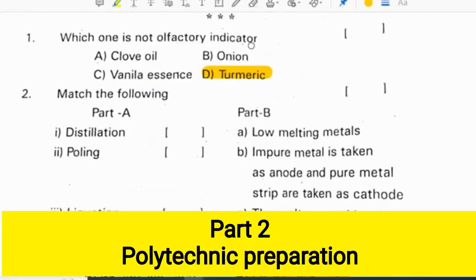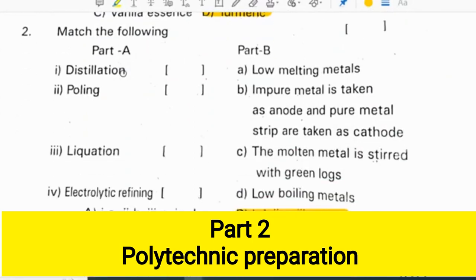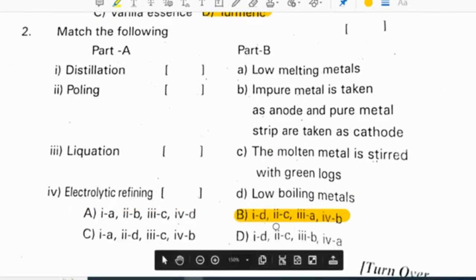Which one is not an olfactory indicator? Turmeric. Match the following: distillation, poling, liquation, electrolytic refining. The correct option is B: 1-D, 2-C, 3-A, and 4-B.